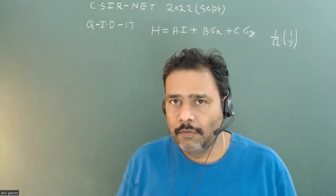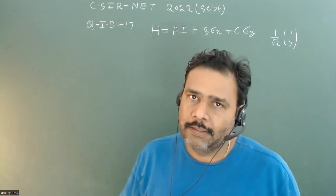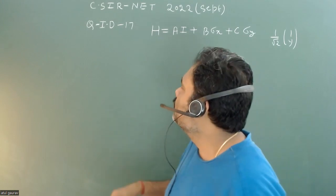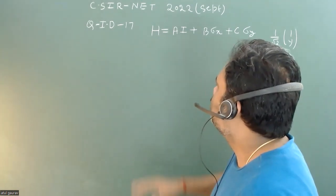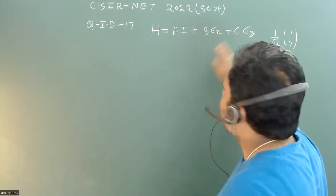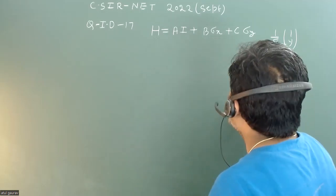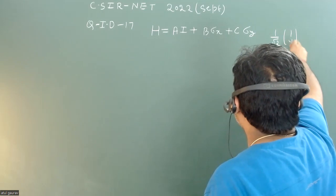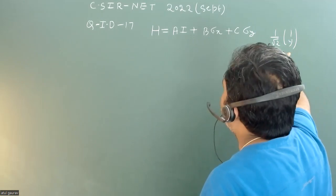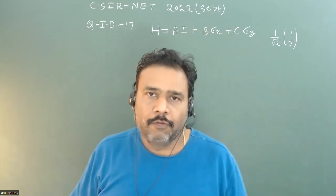Hello students, let's solve one problem from CSIR NET 2022, held in September. This problem is from quantum mechanics. A Hamiltonian is given as a times the identity matrix, plus b times sigma_x, plus c times sigma_y, where sigma_x and sigma_y are the x and y components of the Pauli spin matrices. We have to find the value of y in the vector (1/√2)(1, y) such that this vector is the eigenvector of H for the greatest eigenvalue.